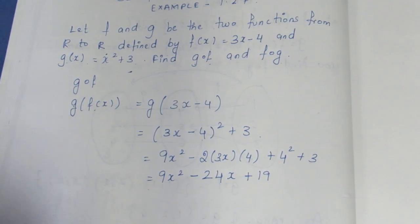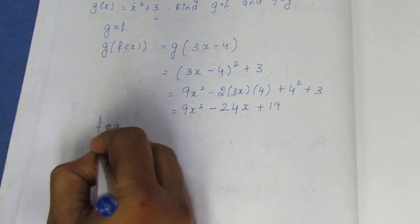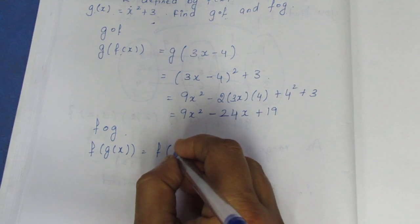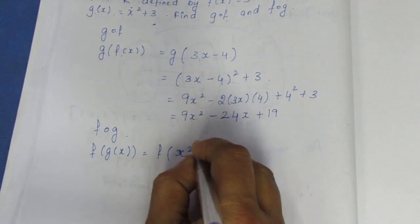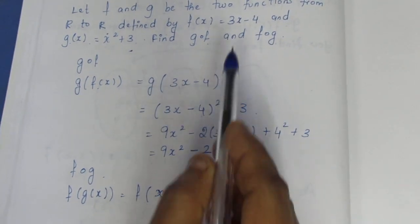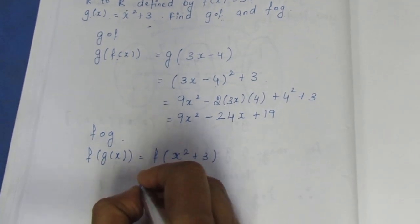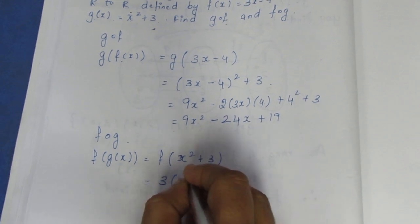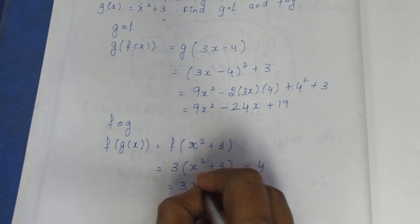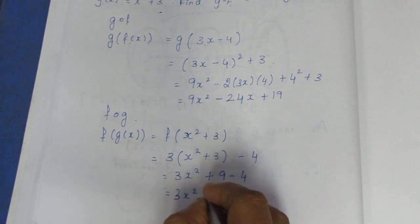Now for f composite g, we find f of g of x. Since g of x is x square plus 3, substituting into f of x gives 3 into x square plus 3 minus 4, which equals 3x square plus 9 minus 4, equal to 3x square plus 5.